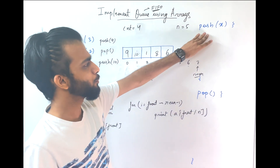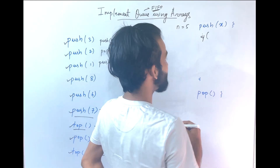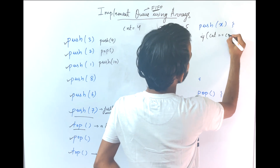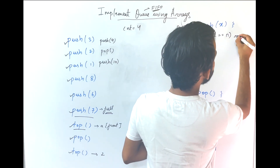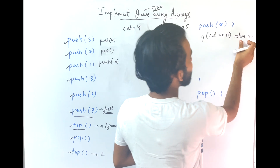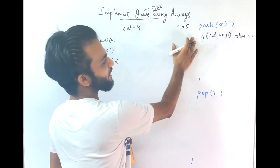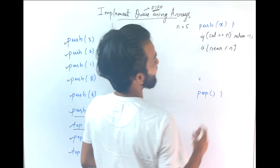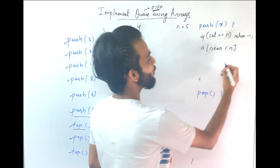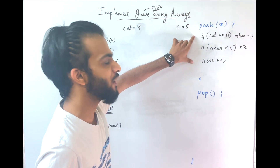Now let's implement the push function. For push(x): first check if count equals n — if so, return -1 or print that the queue is full. Otherwise, do a[rear % n] = x, then rear++, and count++. That is how your push function operates.